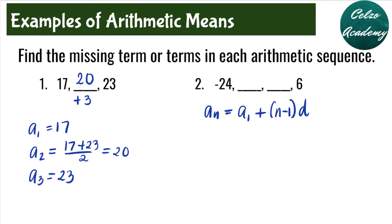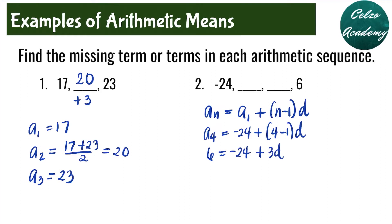Since we have four terms, our n value is 4. So we have a sub 4 equals negative 24 plus 4 minus 1 times d. Our a sub 4 is 6, so we have 6 equals negative 24 plus 3d. Solving for d, we add 24 to both sides: 6 plus 24 is 30, equals 3d. Now we divide by 3 to find the difference, so d equals 10.